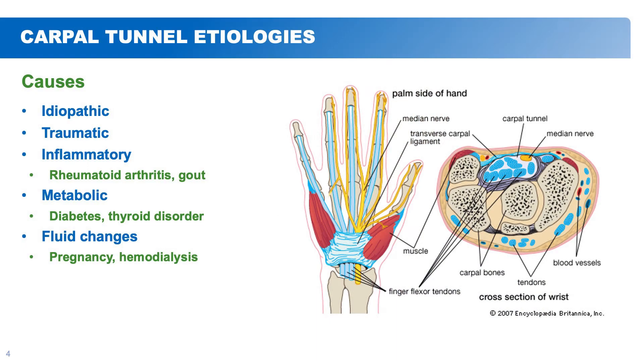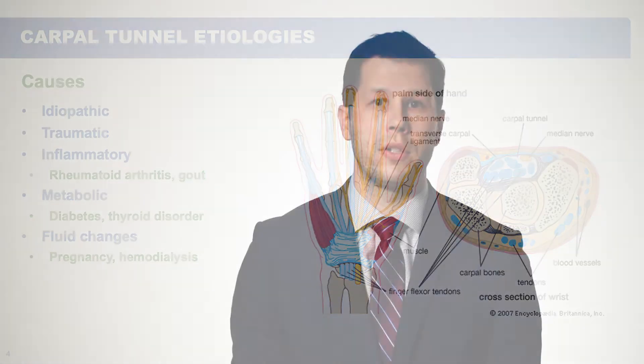There are also metabolic causes. Diabetes can affect nerve health by affecting blood flow to the nerve, and thyroid disorders can also affect it. Fluid changes, such as during pregnancy in young females, can also contribute, and a lot of times these resolve, but it's not uncommon that people will then develop symptoms later in life. Hemodialysis can also contribute as well.